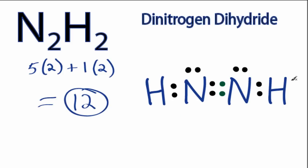We're still using 12 total valence electrons, but now this nitrogen has 8, and this nitrogen has 8. We've used all 12 valence electrons that we started with, and everything has full outer shells. So this is the Lewis structure for N2H2.